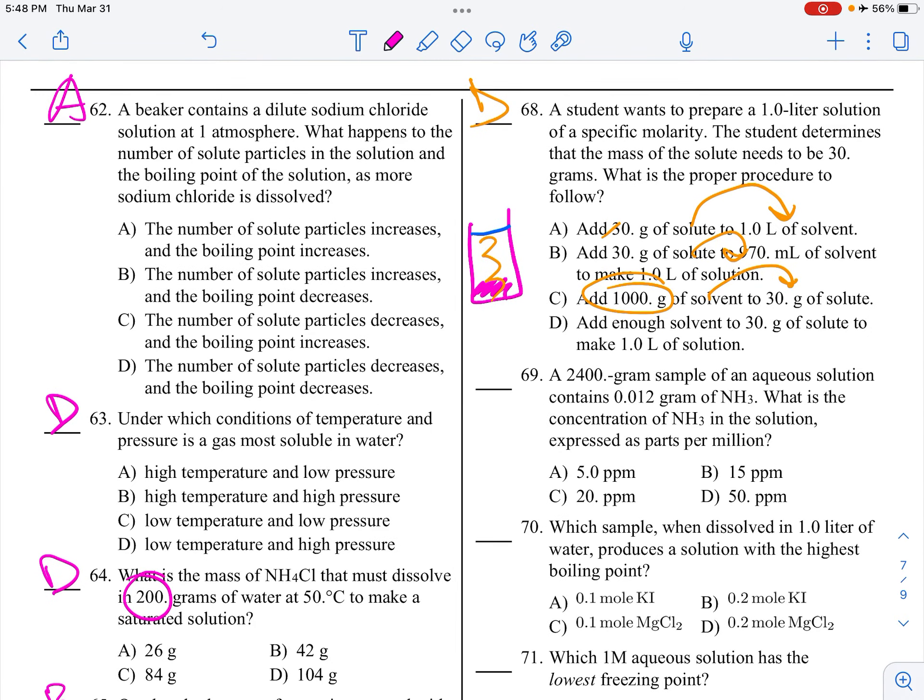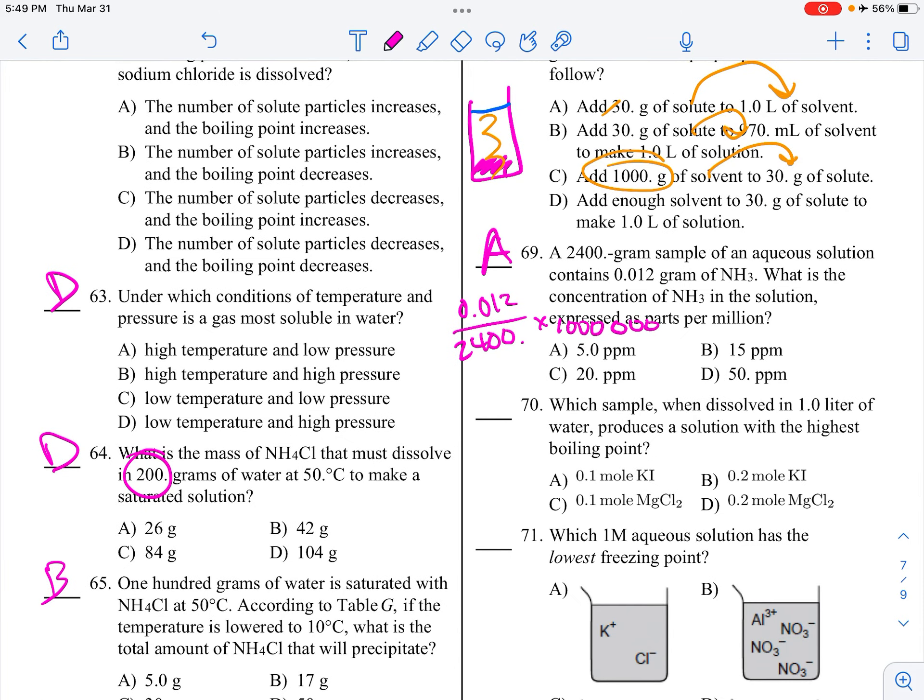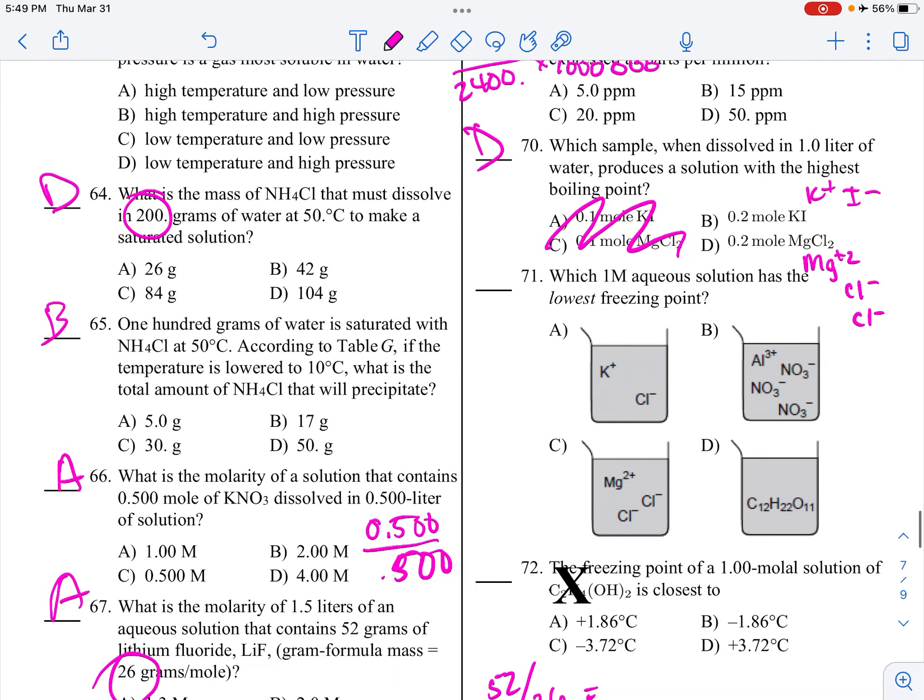What is parts per million? Mass of part over mass of whole times a million. That formula is on Table T as well. Which sample will produce the highest boiling point? You want the greatest concentration and the most ions. This is going to break apart into two ions, K plus and I minus. This is Mg plus 2 and Cl minus 1 twice. So it's going to be choice D. Same with this, the lowest freezing point would have the most particles in solution, which is choice B.